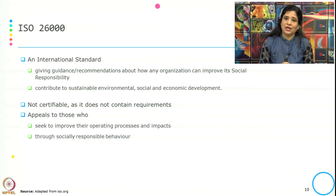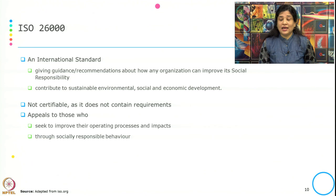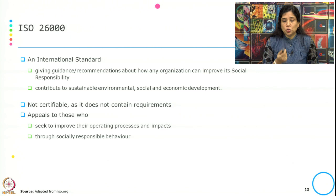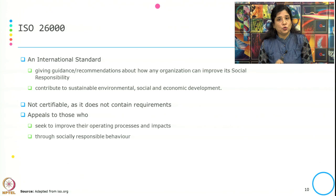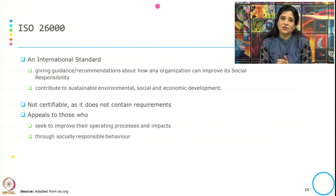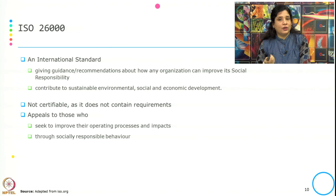ISO 26000 is not certifiable — there is no certificate associated with it, at least not developed until now. As it does not contain any requirements, it appeals to those who seek to improve their operating processes and impact through socially responsible behavior. It is more about guidance, recommendation, and framework to help the organization improve their social responsibility. ISO 26000 is also linked to the Sustainable Development Goals.